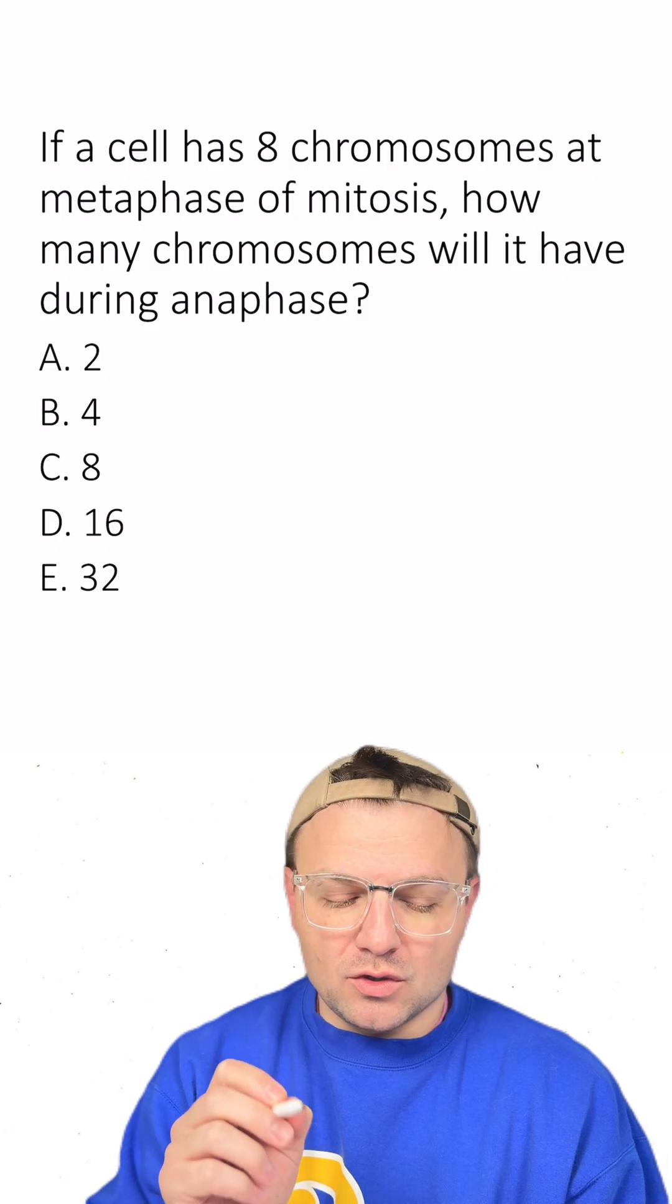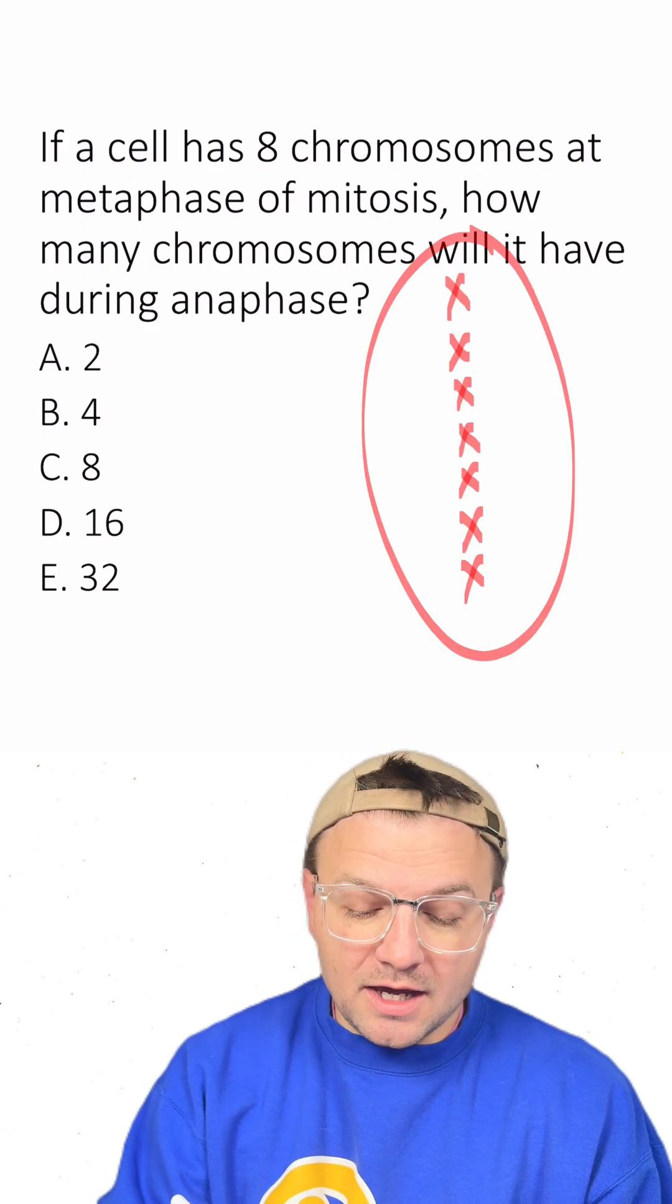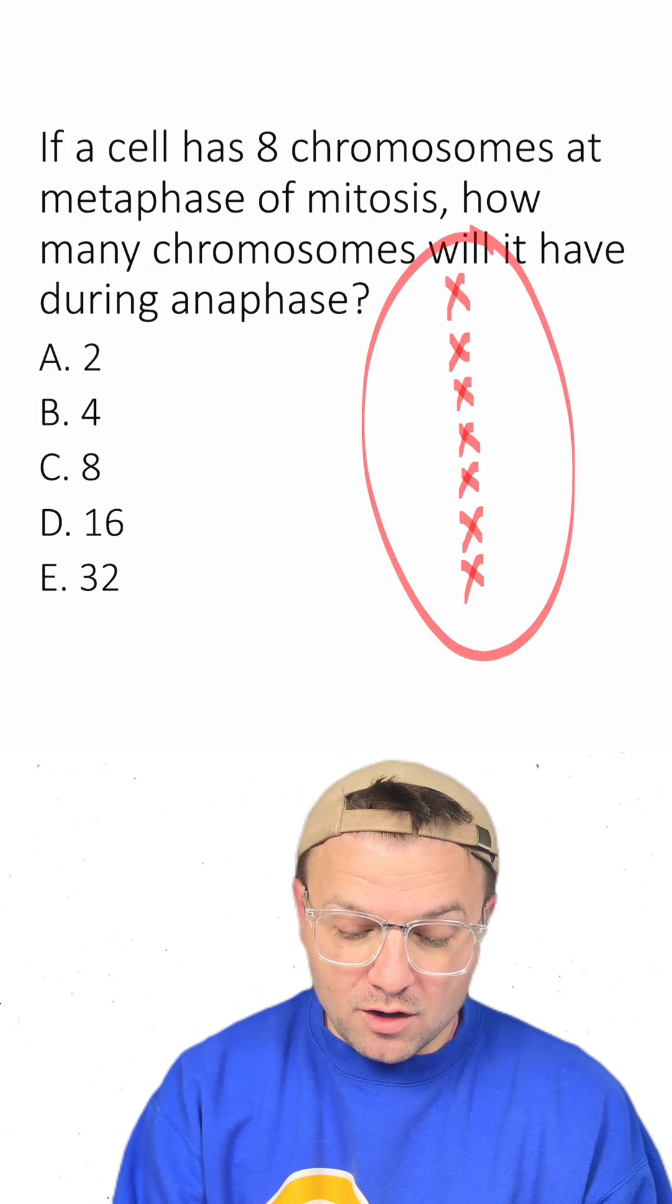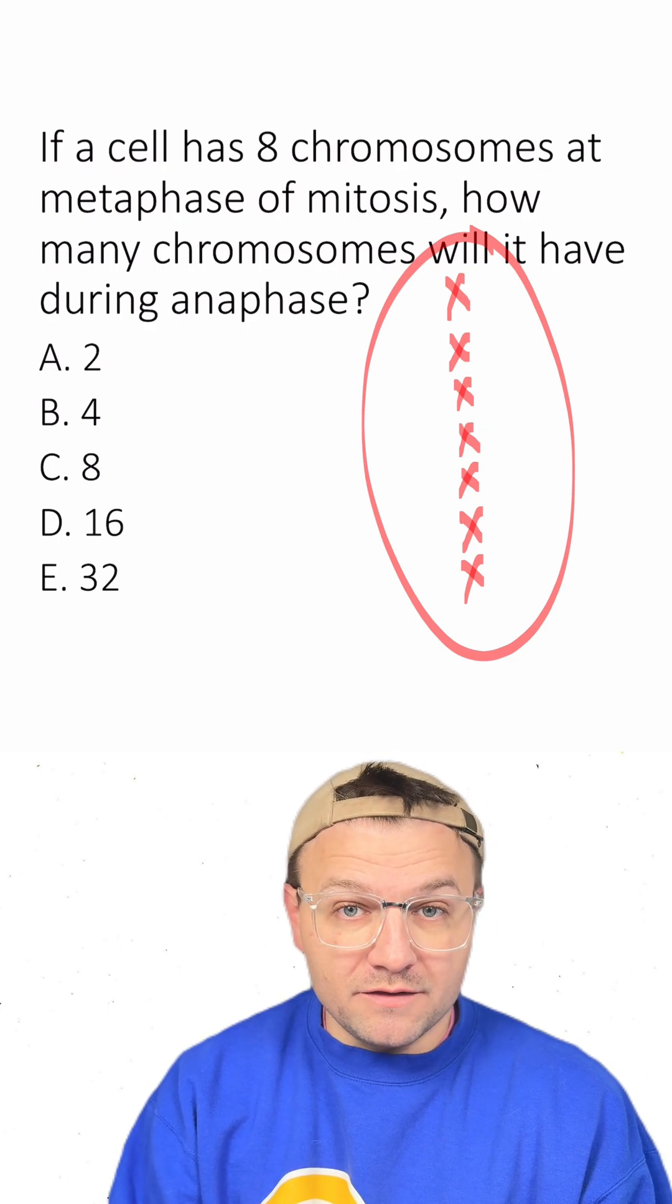So if we have eight chromosomes during metaphase of mitosis, it's going to look something like this, where there are eight chromosomes along the middle of the cell.